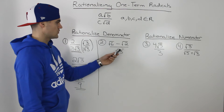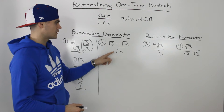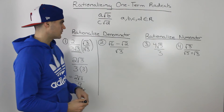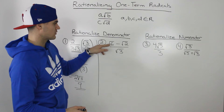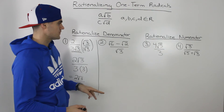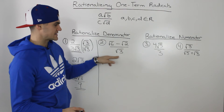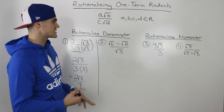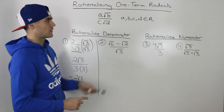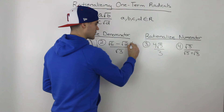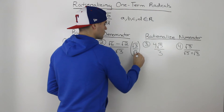We've got root 6 minus root 2 over root 3, and we have to rationalize the denominator — get rid of this root 3. Initially you might think it's a two-term radical because in the numerator there's root 6 minus root 2. However, because we're rationalizing the denominator and there's only a single term in the denominator, we would still use the same format as rationalizing one-term radicals.